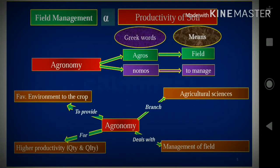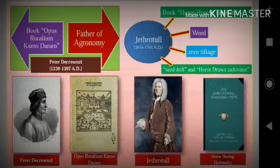Agronomy is coming from two Greek words. The first one is agros, which means field, and the second one is nomos, which means to manage. We can define agronomy as the branch of agricultural sciences which deals with management of field, used for higher productivity both in quantity and quality, and it provides a favorable environment to the crop. We simply call agronomy as field management.